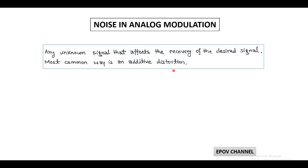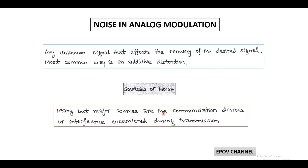In the communication system, transmitters and receivers basically consist of electronic devices and are the major source of additive noise. Also there might be any other electromagnetic signal which can interfere with the desired EM signal, which makes the received signal noisy.